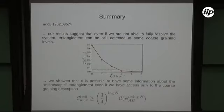So that's it. I'm summarizing. Our results suggest that even if we are not able to fully resolve the system, entanglement can be still detected at some coarse-graining levels and show that it's possible to have some information about the microscope entanglement even if we have access only to the coarse-grained description.